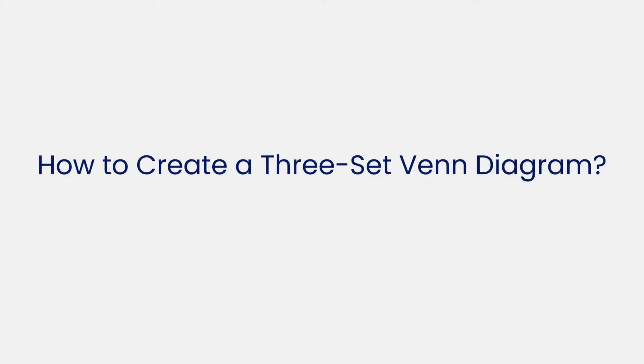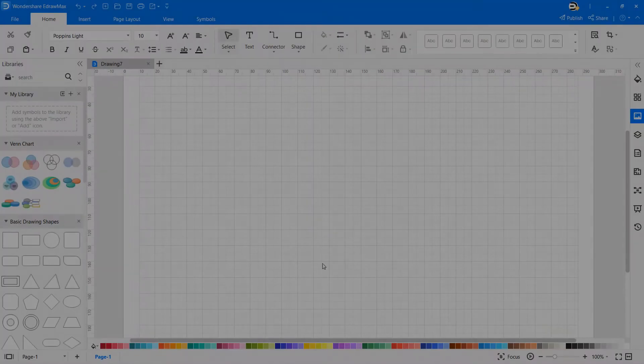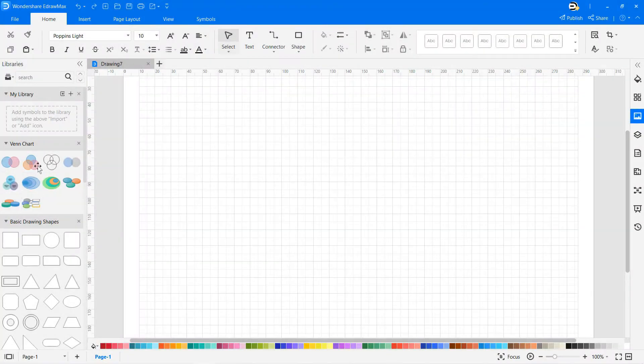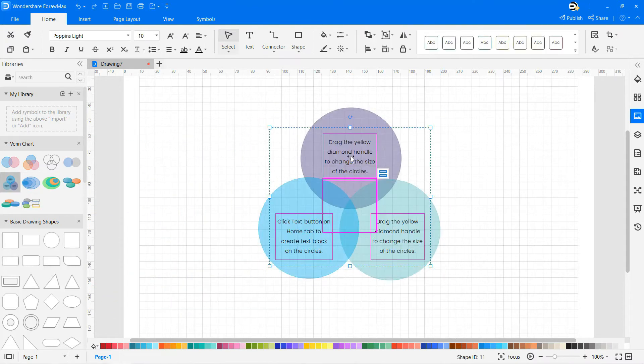Now let's learn how to create a three-set Venn Diagram. In a three-set Venn Diagram, all sets have some overlap with each other. It starts to get more complicated, and it will end up with seven distinct sections, including the center, which covers the union of all three sets. You can draw this using predefined three-set Venn Diagram shapes from the library, based on your needs.